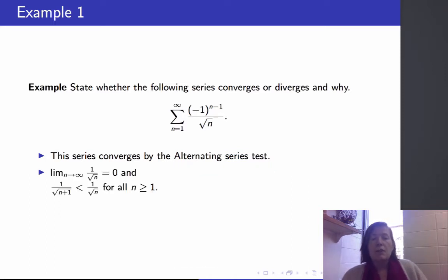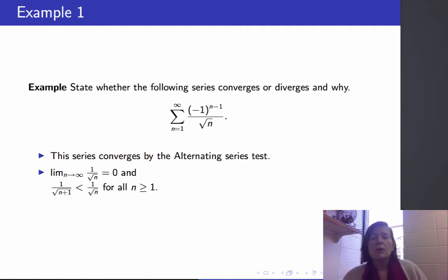The limit as n goes to infinity of the positive part is zero because the square root of n tends to infinity as n tends to infinity. And because n+1 is bigger than n, 1 over the square root of n+1 is less than 1 over the square root of n for all n ≥ 1. So this series satisfies both conditions for the alternating series test, and we can conclude that it converges by the alternating series test.